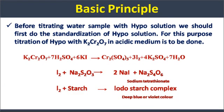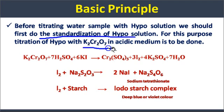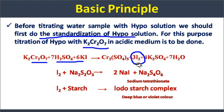Before titrating the water sample with hypo solution, we first perform standardization of the hypo solution using standard potassium dichromate solution. When potassium dichromate is mixed with potassium iodide in acidic medium, it liberates an equivalent amount of iodine, which is then titrated against the hypo solution using starch indicator.